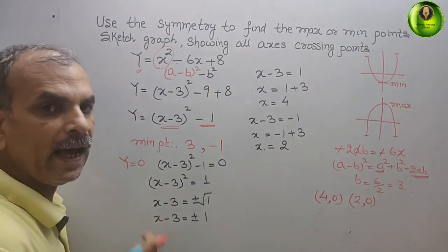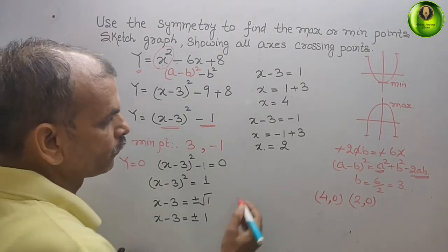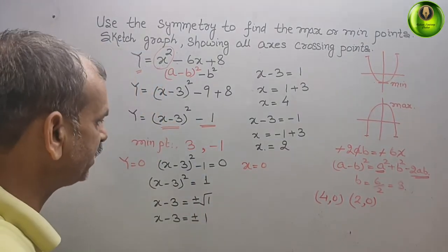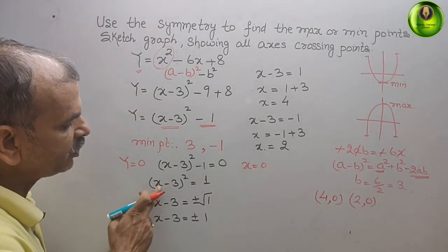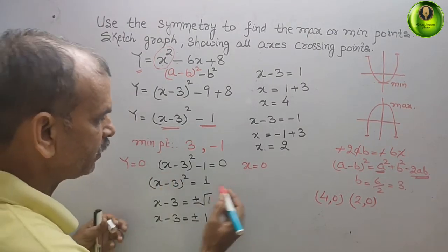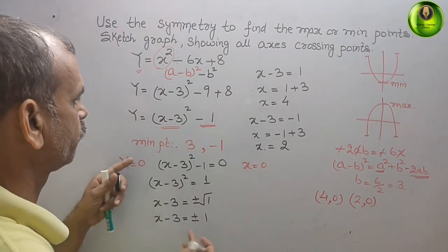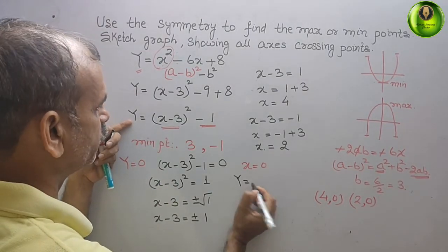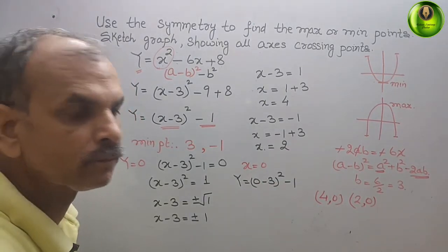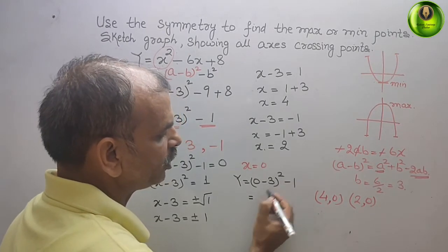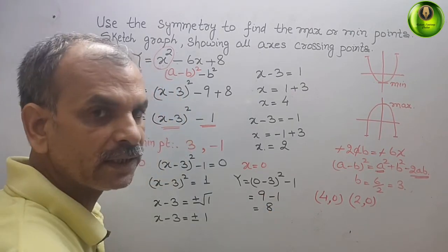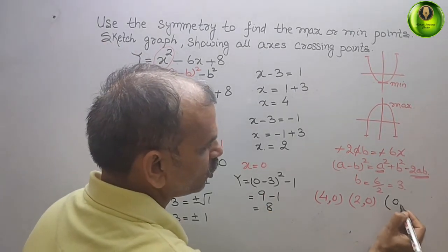Next, we take x equal to 0 to find the y-intercept. Substituting, y equals 0 minus 3 whole square minus 1, which equals 9 minus 1, giving y equal to 8. So the y-intercept coordinate is (0, 8).